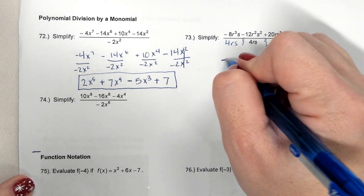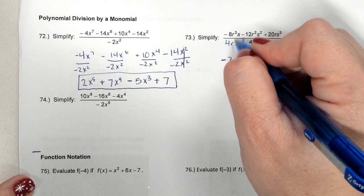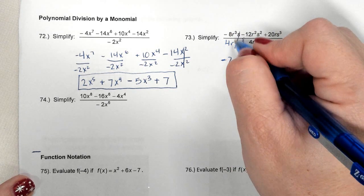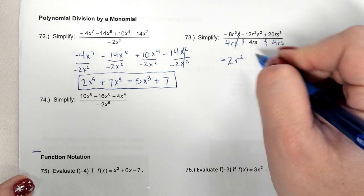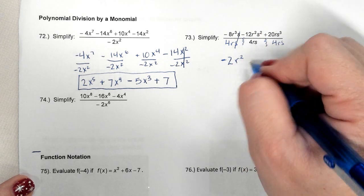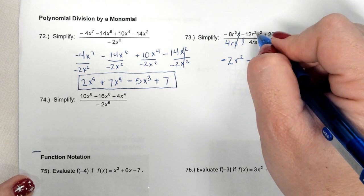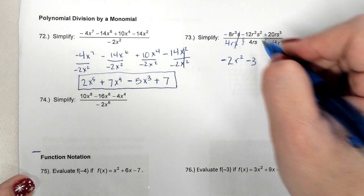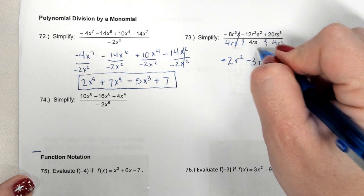-8 divided by 4 is -2. There are more r's on top, and the s's cancel. 3 minus 1 is 2. -12 divided by 4 is -3. There are more r's and s's on top. 2 minus 1 is 1, 2 minus 1 is 1.